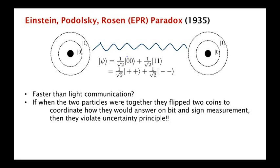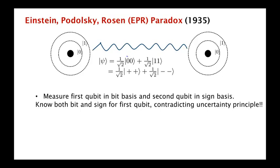You see, the particles are not allowed to know if the bit value is perfectly determined, then the sign value is maximally uncertain. This is what we showed in the last lecture in the uncertainty principle. And so we are in a bind. Neither of these two possibilities seems reasonable. Relativity rules out the first, and the uncertainty principle rules out the second possibility.